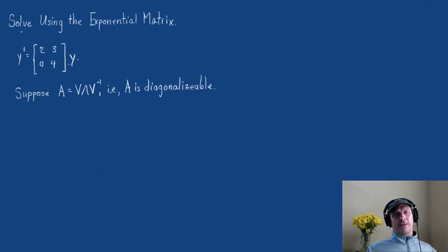Or A is diagonalized. I'm not sure what the best vocabulary there is, but that's okay. So, in other words, if this is true, then what we said is that E to the AT, this can be cleaned up as V, E to the lambda T, V inverse.